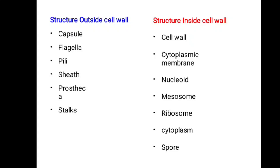The bacterial structure is divided into outside and inside the cell wall. Outside the cell wall: capsule, flagellum, pili, sheath, prosthecae, and stalk. Inside the cell wall: cell wall, cytoplasmic membrane, nucleoid, mesosomes, ribosomes, cytoplasm, and spores.